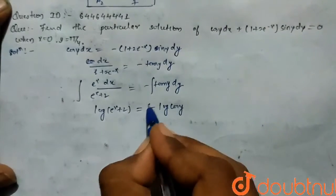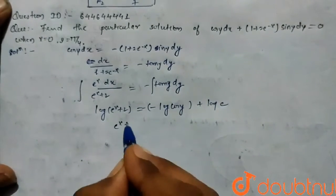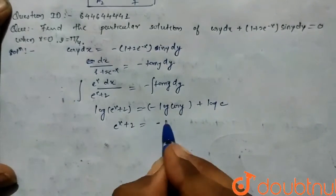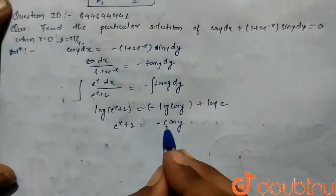So it becomes positive plus log c. So e to the power x plus 2 is equals to c cos y.